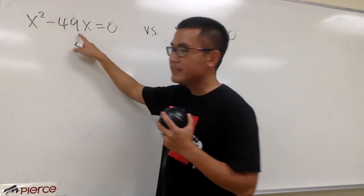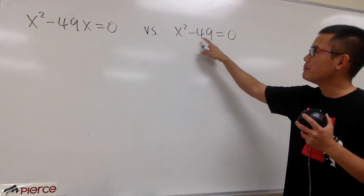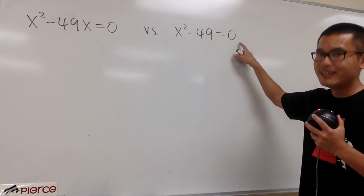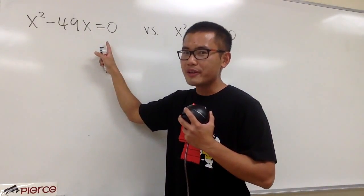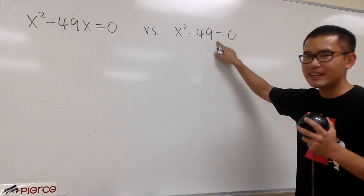First one is x squared minus 49x is equal to 0, versus this second one, x squared minus 49 is equal to 0. As we can see, the first one here, we have this x, but the second one, it does not have the x.